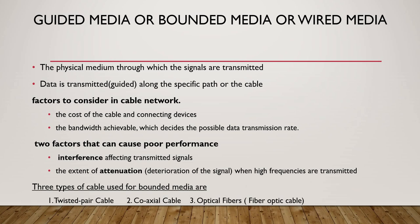There are three types of cables used as bounded media: twisted pair cable, coaxial cable, and fiber optic cable. Twisted pair cable and coaxial cable are made up of wire, whereas fiber optic cable uses different technology. The first two — twisted pair cable and coaxial cable — use copper wire to transmit data.